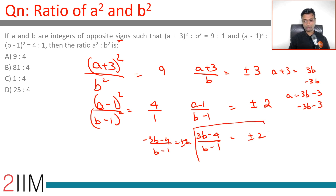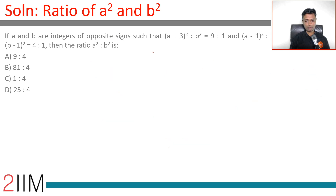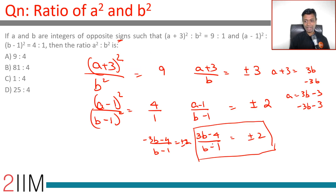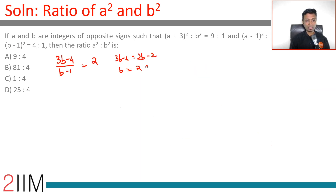Starting with (3B−4)/(B−1) = 2: this gives 3B−4 = 2B−2, so B = 2. With A = 3B−3, B = 2 gives A = 3. Checking: (A−1)²/(B−1)² = 4 works, but A = 3 and B = 2 are both positive — not opposite signs. This case does not work.